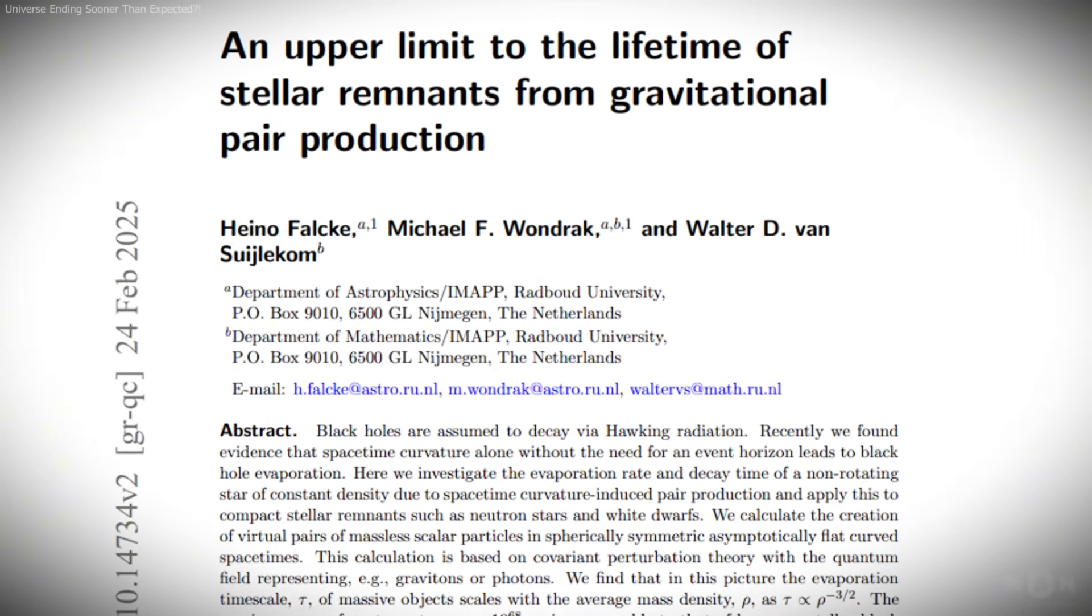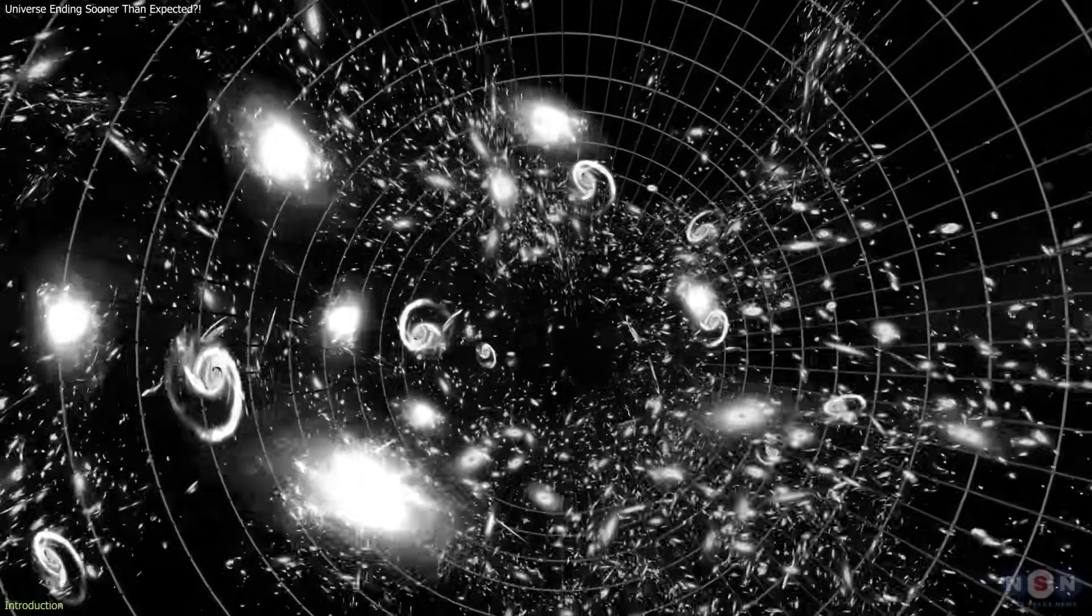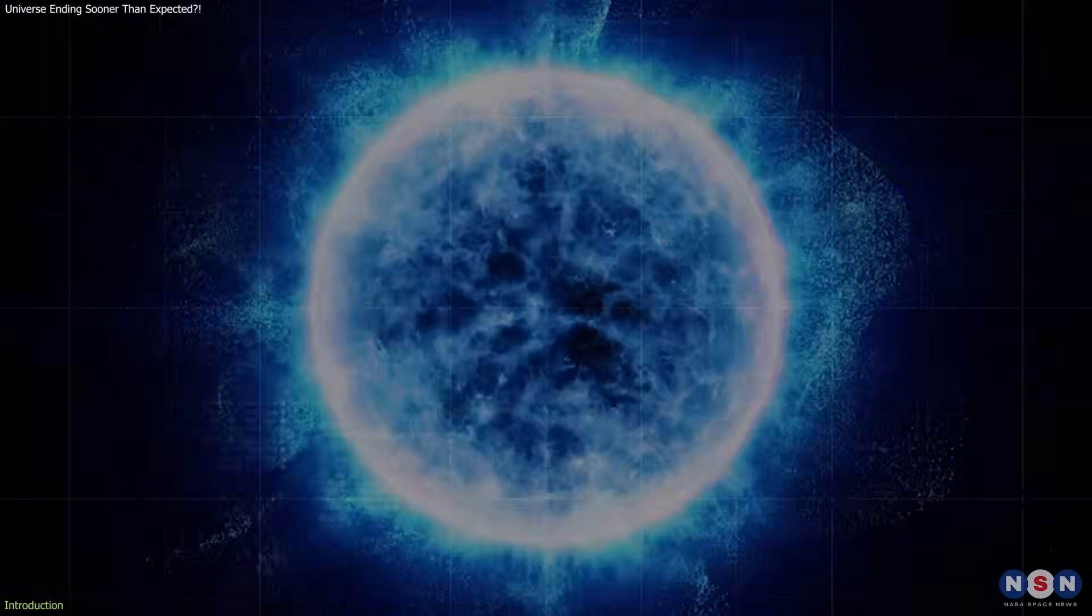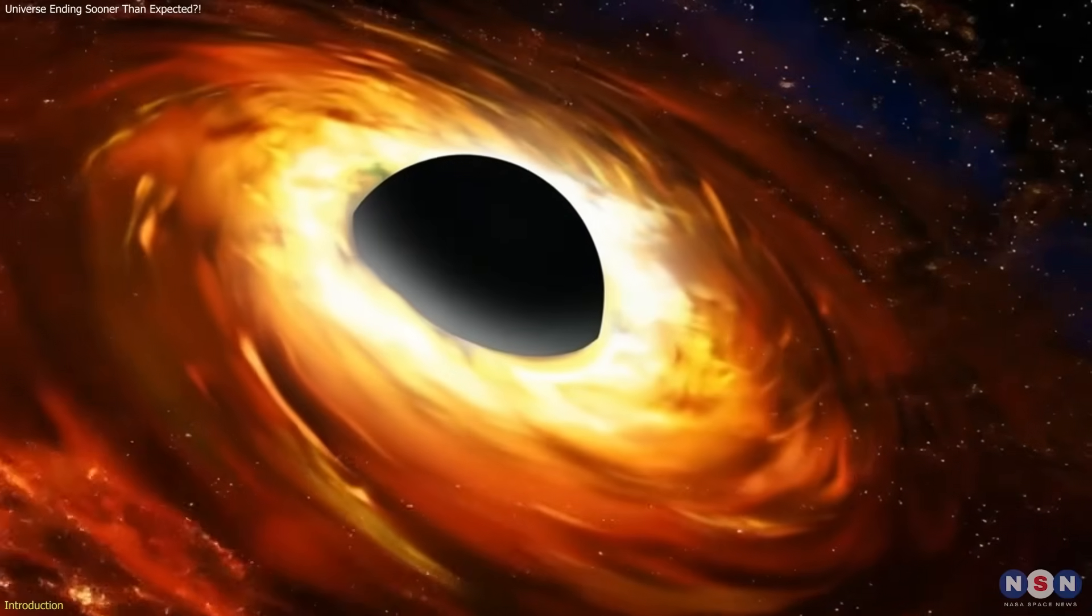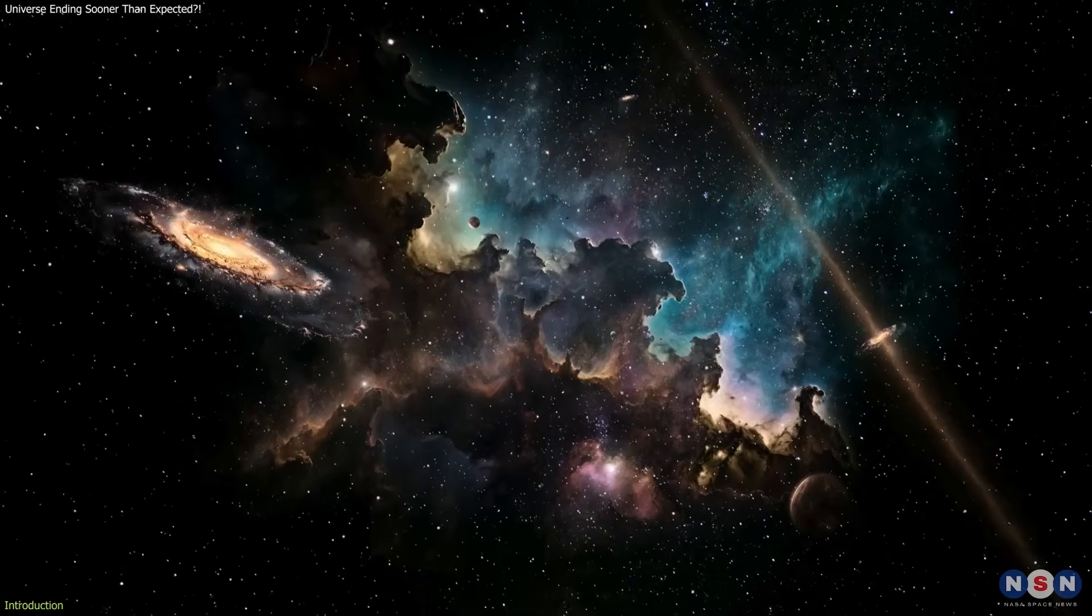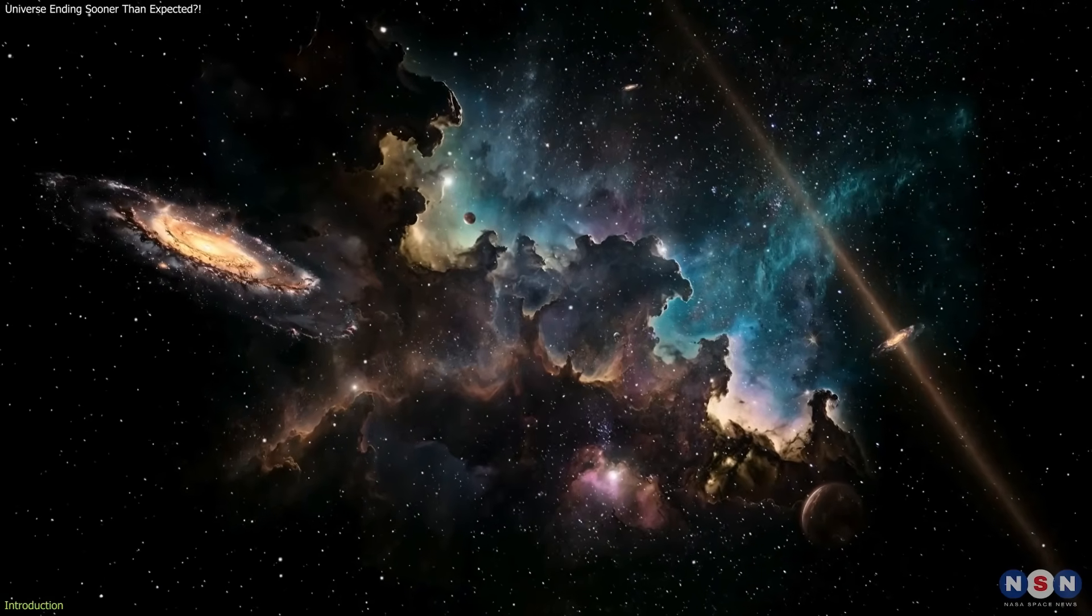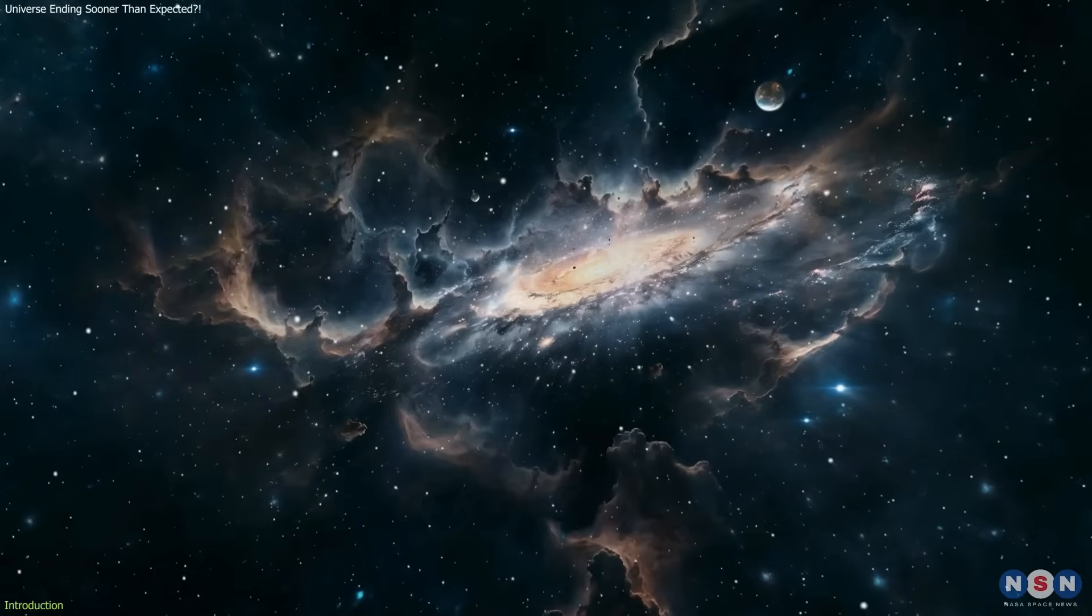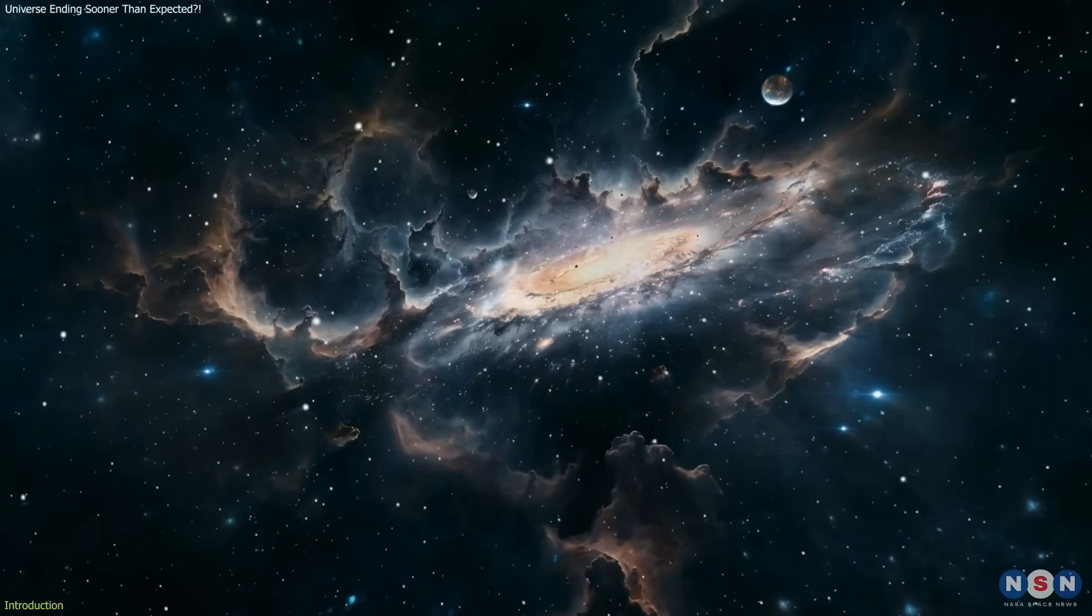A new theoretical study from researchers in the Netherlands suggests the universe may fade away far sooner than we expected. Their calculations show that even neutron stars, white dwarfs, and black holes slowly lose mass through quantum processes, meaning nothing in the cosmos is truly permanent. It's a subtle shift in our understanding, but one that reshapes the long-term future of the universe.